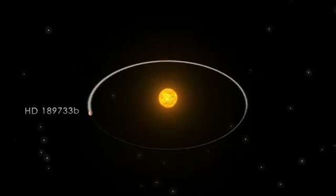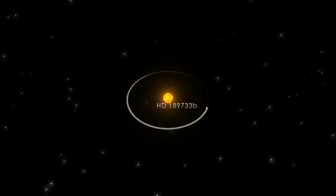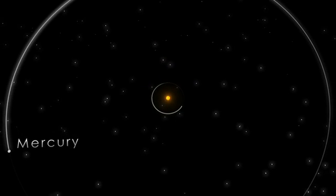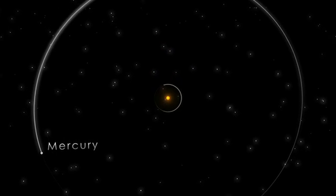Incredibly, the planet orbits just 3 million miles from the star, 12 times closer than Mercury orbits our Sun. It's so close that the planet whips around its star in a little over two days.